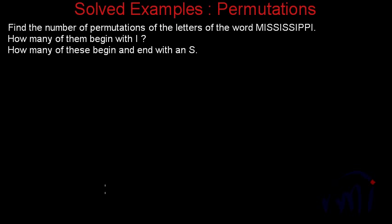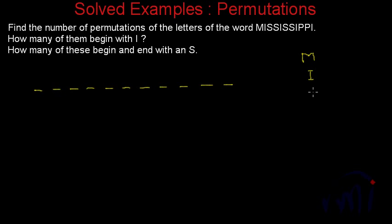Mississippi is an 11-letter word, but it has only 4 distinct letters. So the length of this word is 11. Let me make 11 places. This word is made up of only 4 letters: M, I, S, and P. M is repeated once, I is repeated 4 times, S is repeated 4 times, and P is repeated twice. So 4 plus 4 is 8, plus 2 is 10, plus 1 is 11 — these are the total 11 letters.